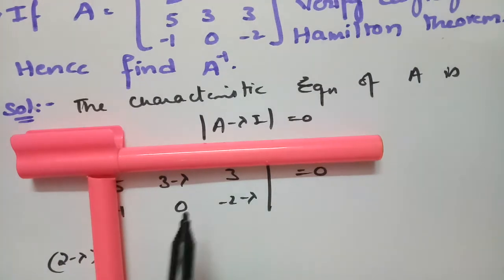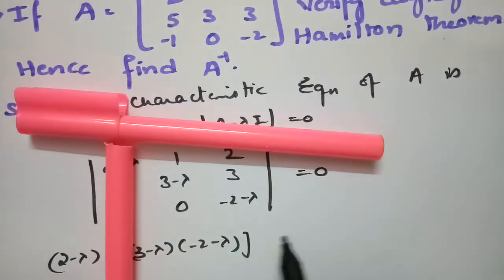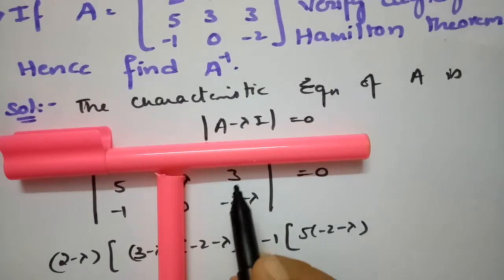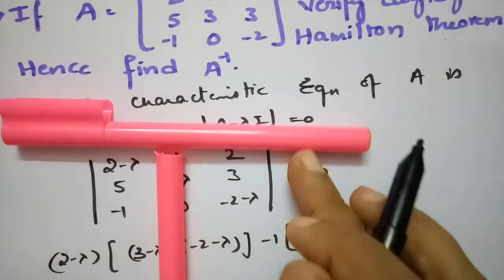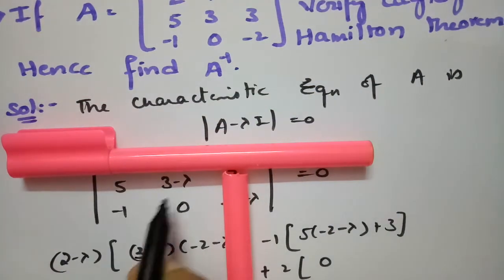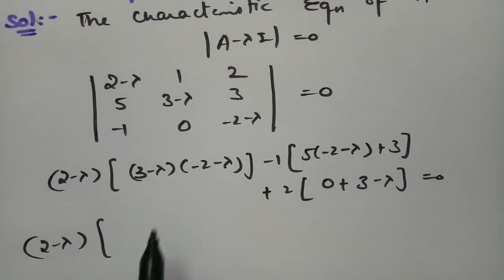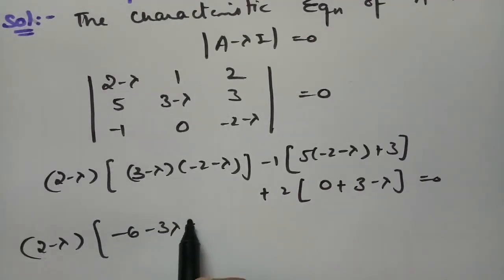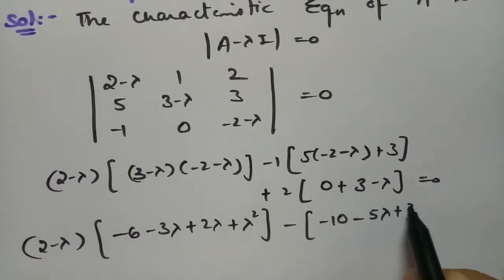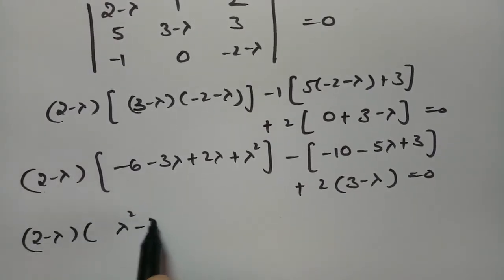Expanding the determinant: (2 minus lambda) times [(3 minus lambda)(minus 2 minus lambda) minus 0] minus 1 times [5(minus 2 minus lambda) minus (minus 3)] plus 2 times [0 minus (3 minus lambda)] equals 0. Multiplying out, we get (2 minus lambda) times (lambda² minus lambda minus 6).